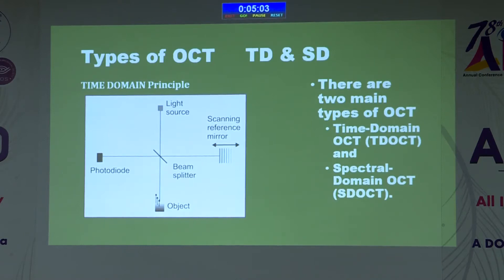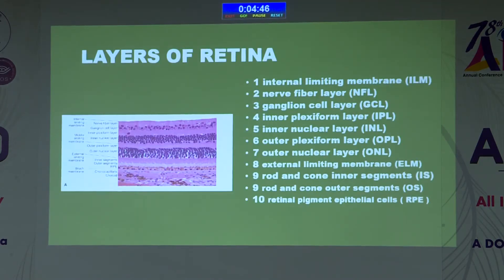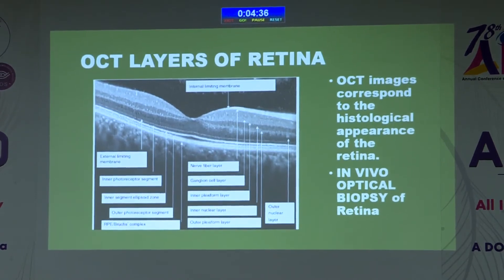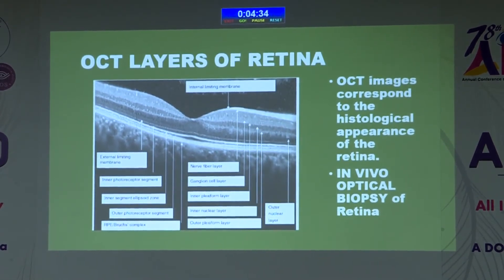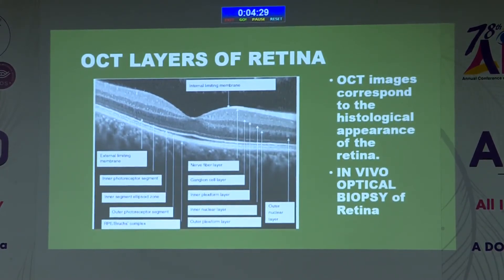Time domain and spectral domain are the two types of OCT. Spectral domain has replaced time domain OCT technology because it offers significant advantages in image resolution and imaging speed. Histopathological examination of the retina shows ten layers, and OCT images correspond to the histological appearance of the retina. That is why OCT imaging is also called in vivo optical biopsy of the retina.